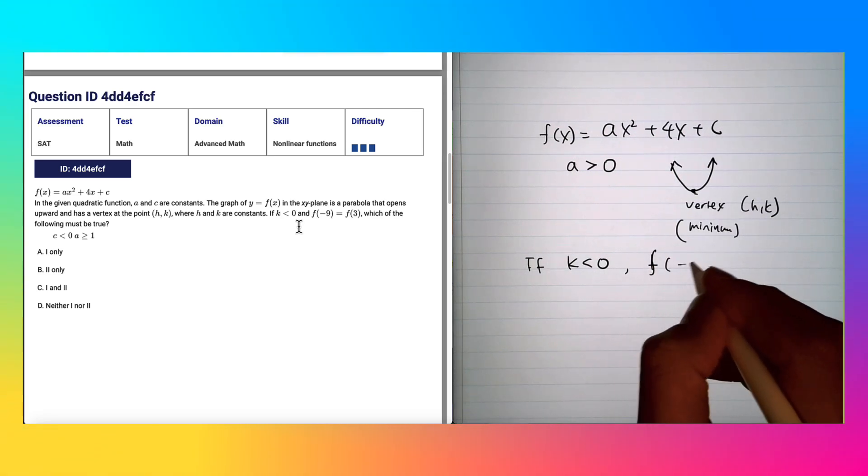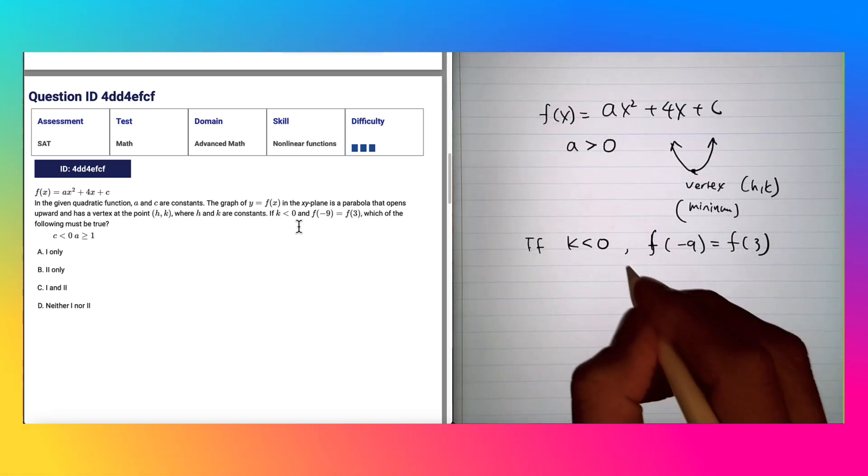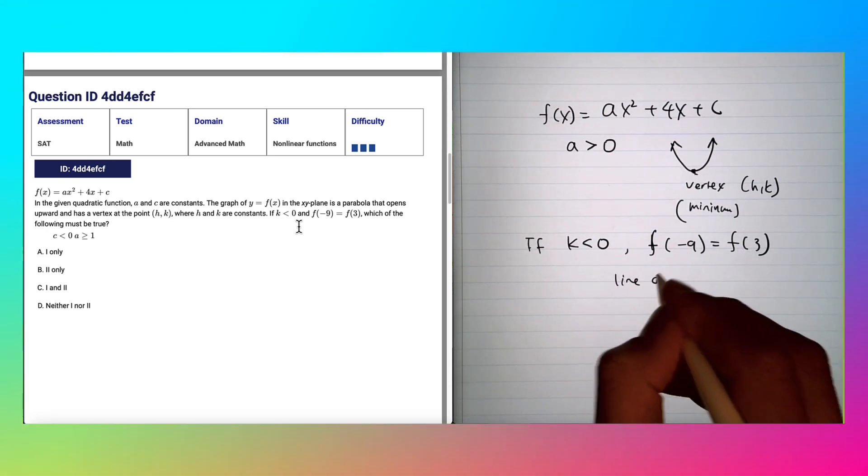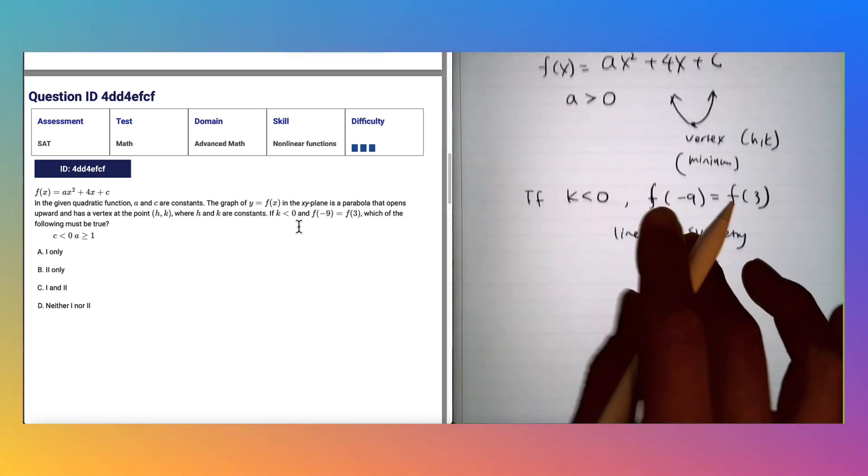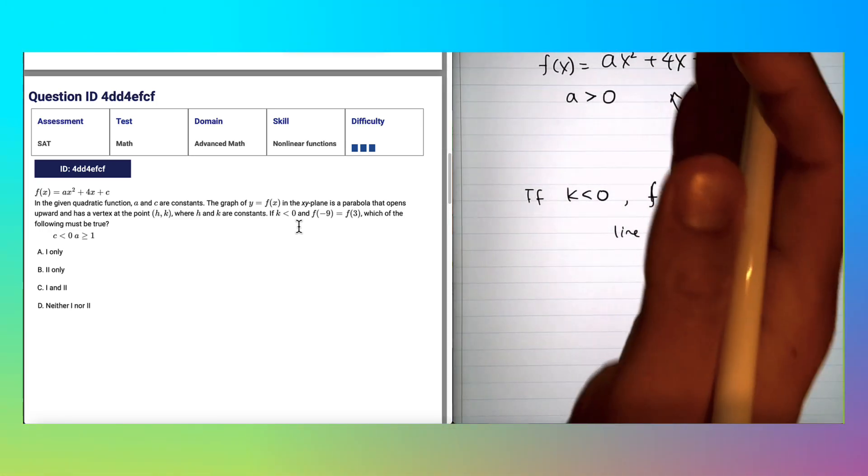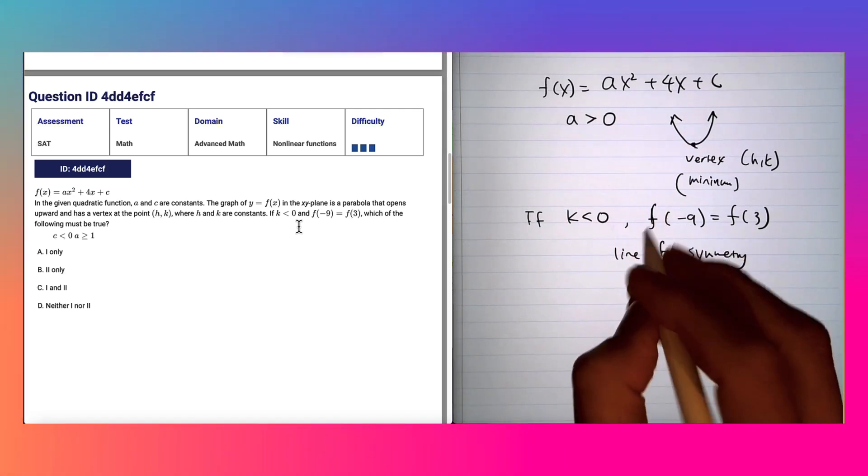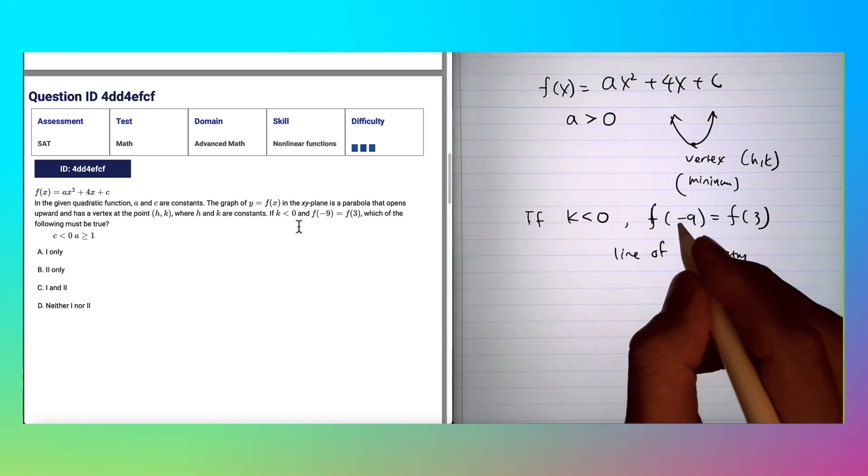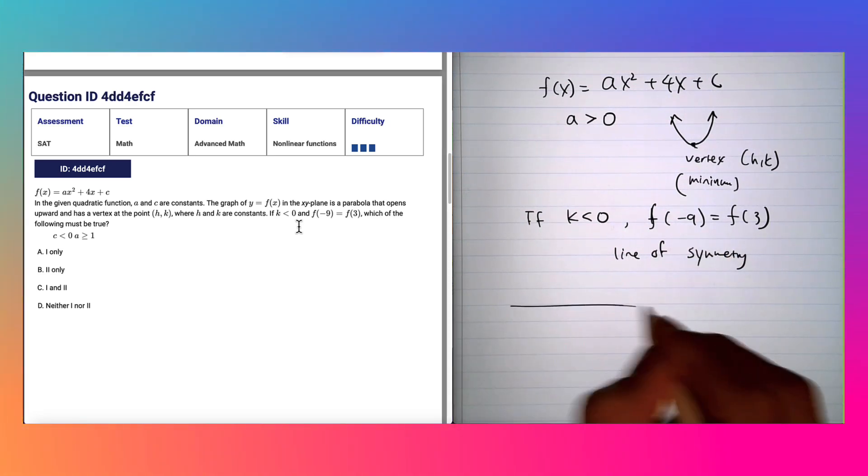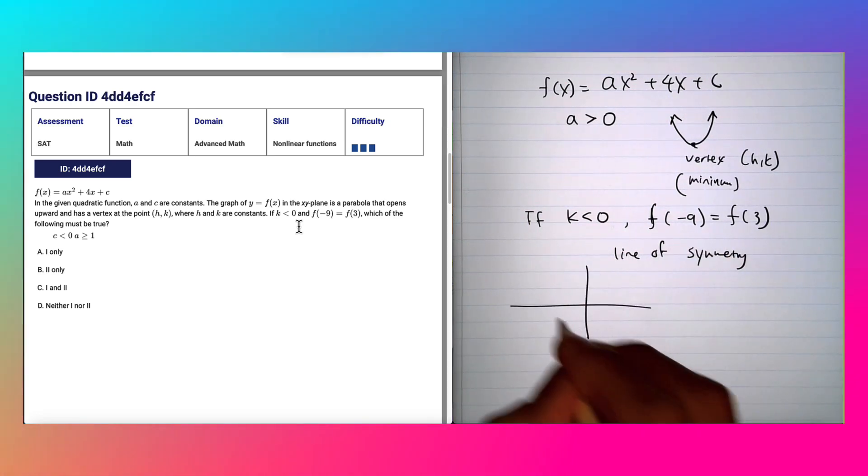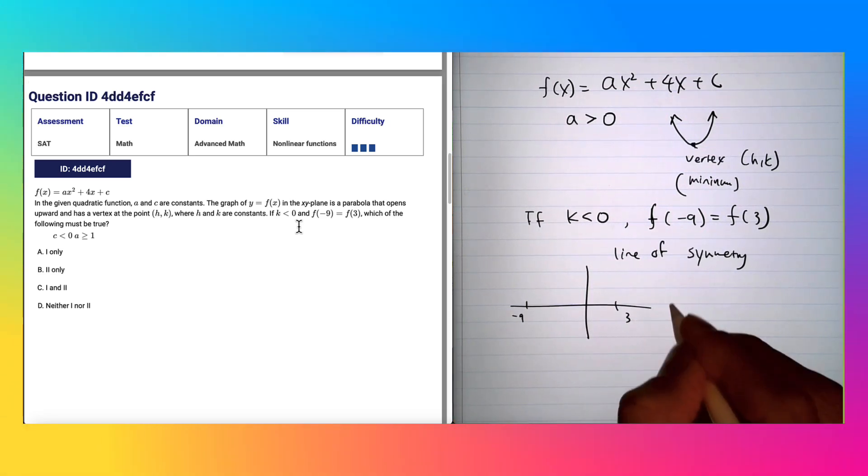This tells us that we can find the line of symmetry. From the line of symmetry, the graph of quadratic function will always be symmetrical. So if you take this advantage, if these two points are equal, let me just draw a really rough sketch here. We have -9 and positive 3 here for x.